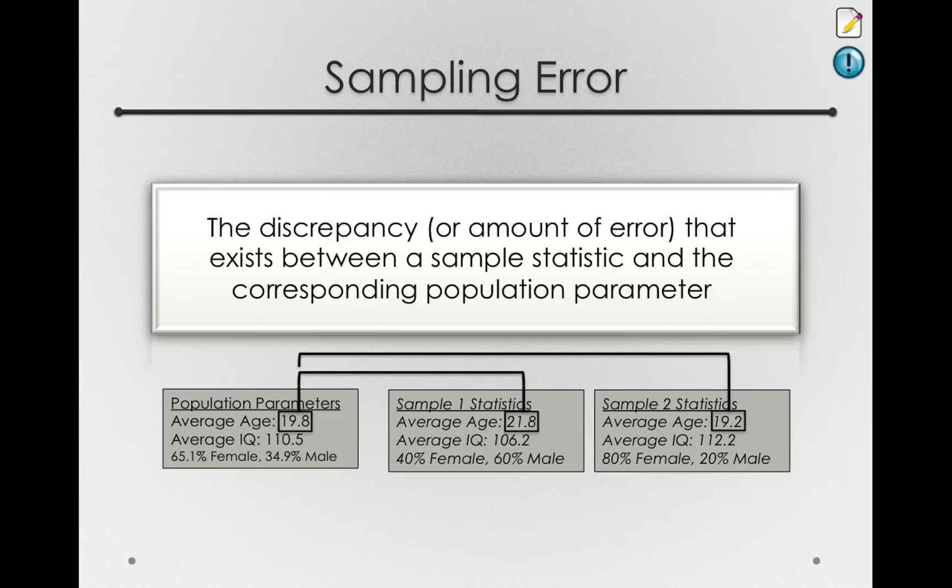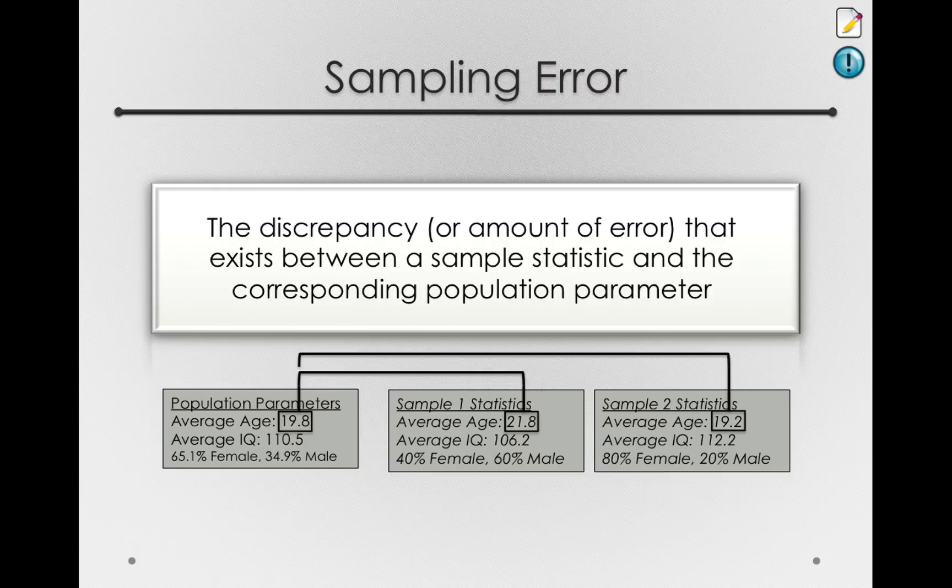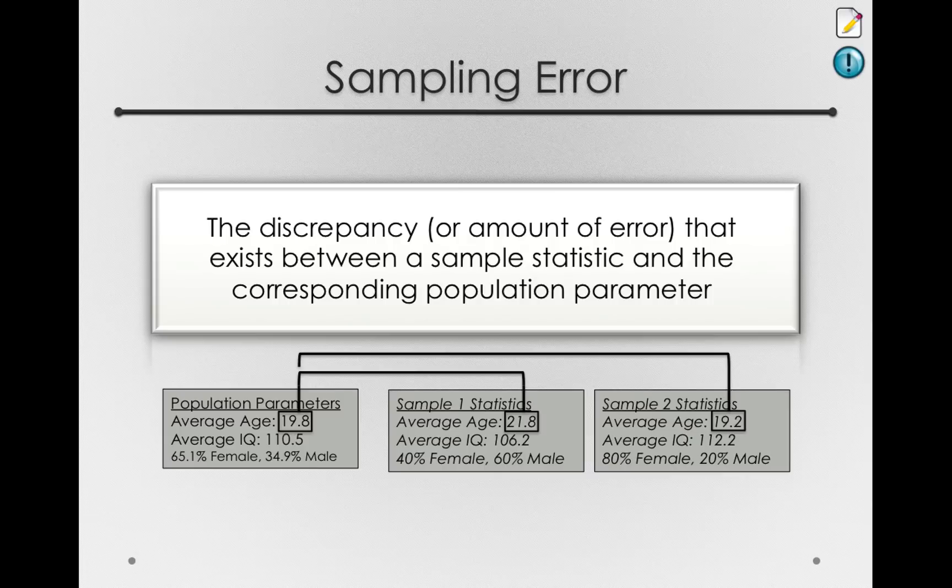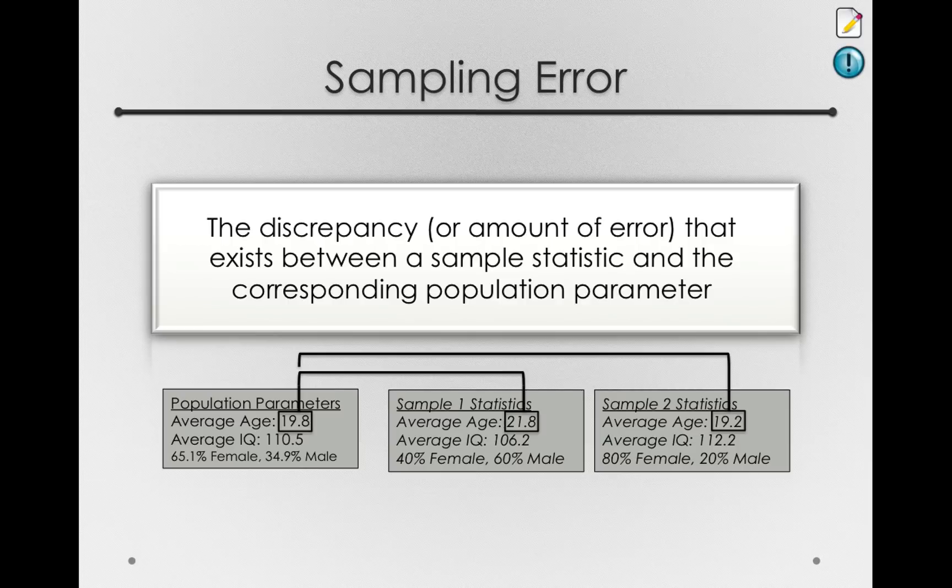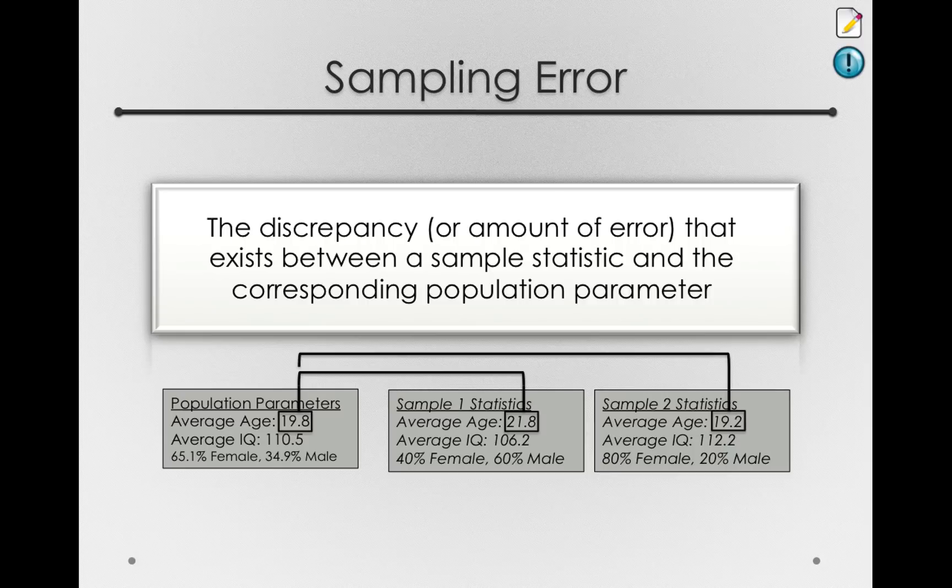That difference is due to the fact that we took a sample and we shouldn't expect samples to have exactly the same statistics as the corresponding population parameters. Now, we call this error in statistics, but it's not an error like you did something wrong. This is error that is present in all statistics and all samples we take. Sampling error is an ever-present feature of sampling. We will always have some discrepancy between the sample statistics and the population parameters.